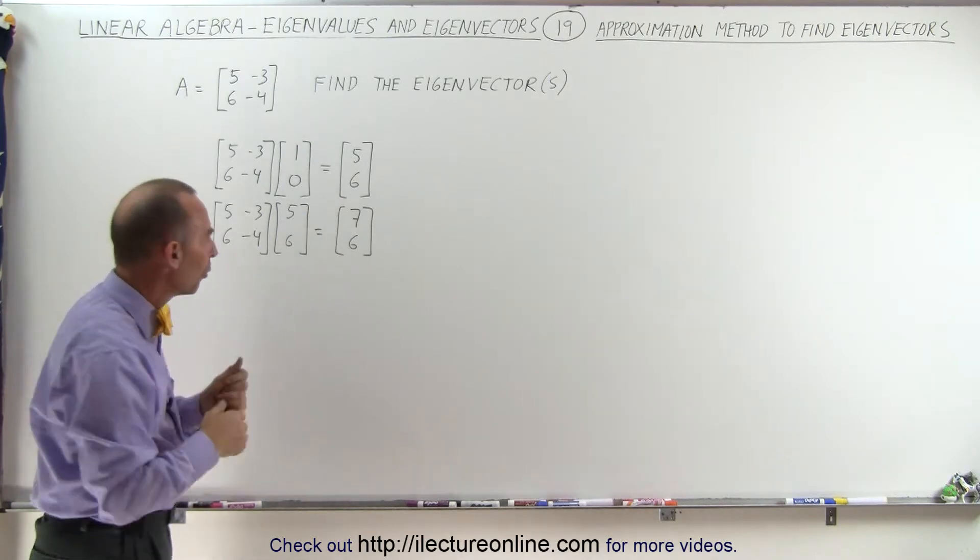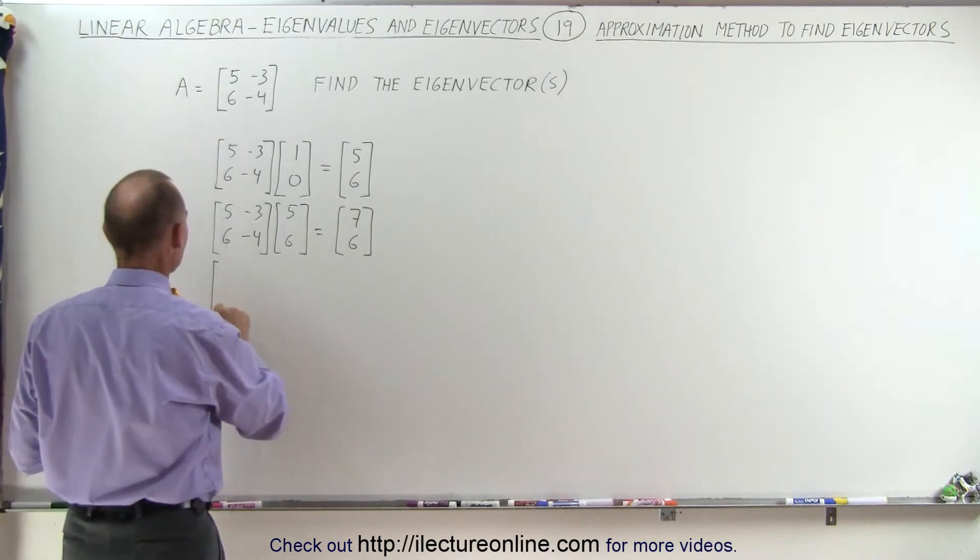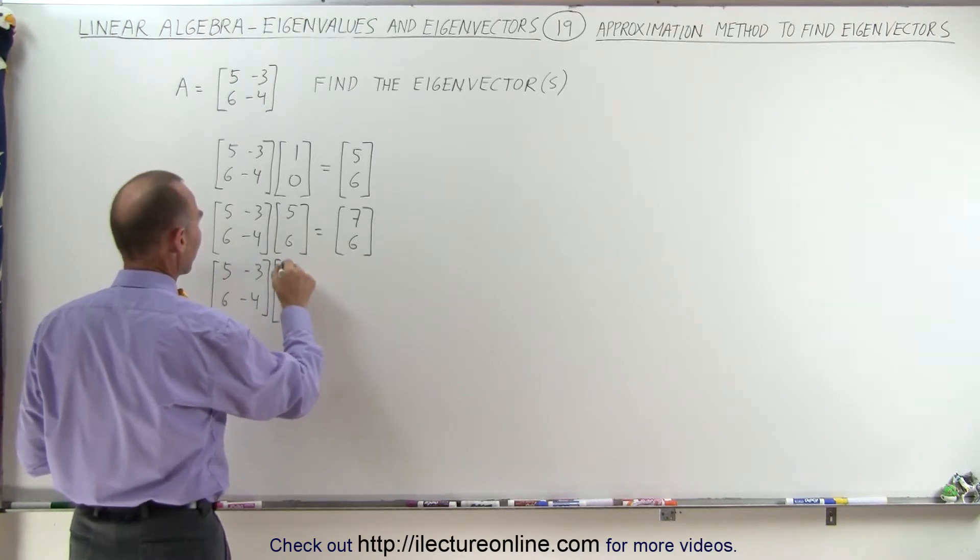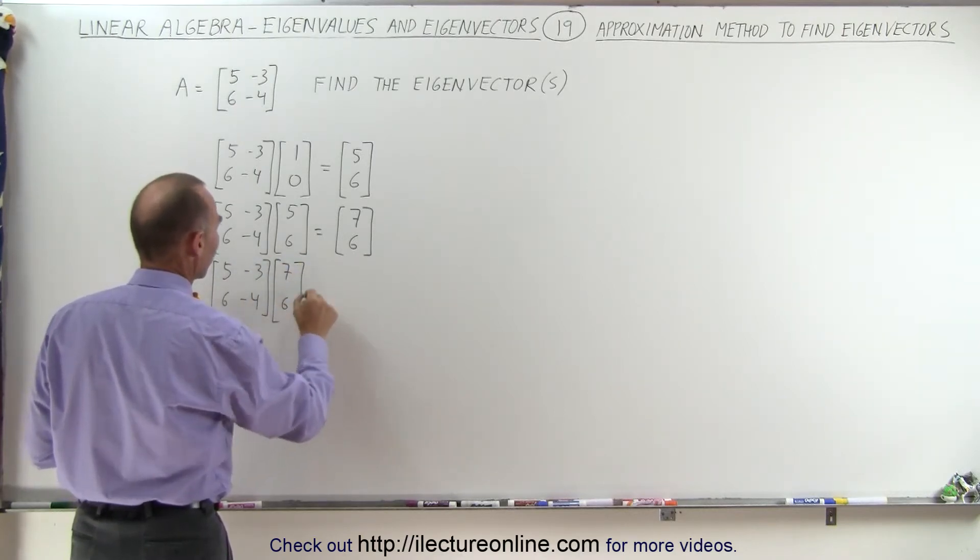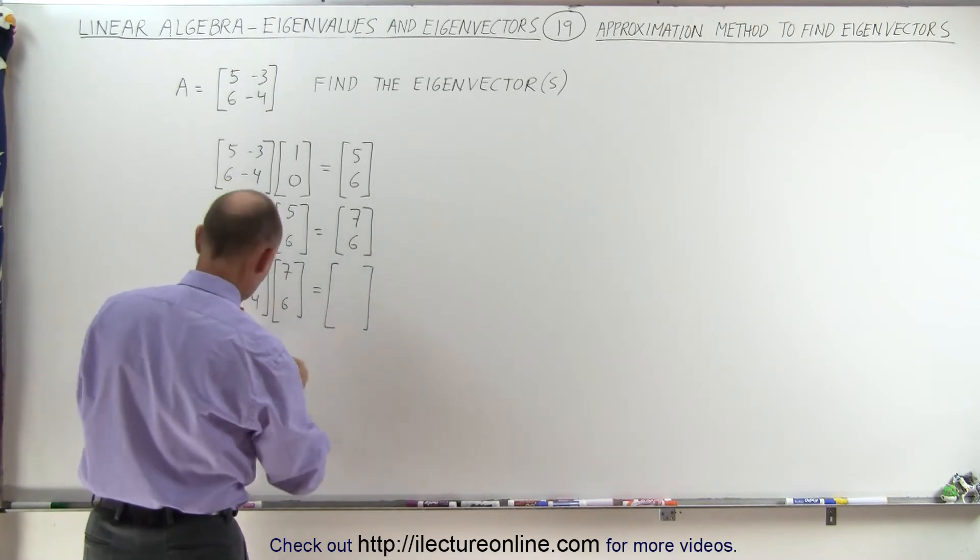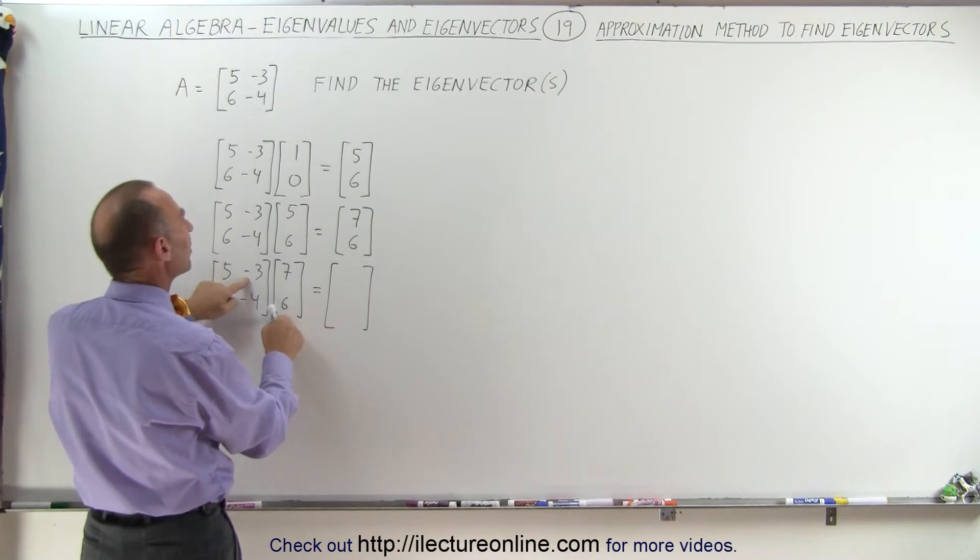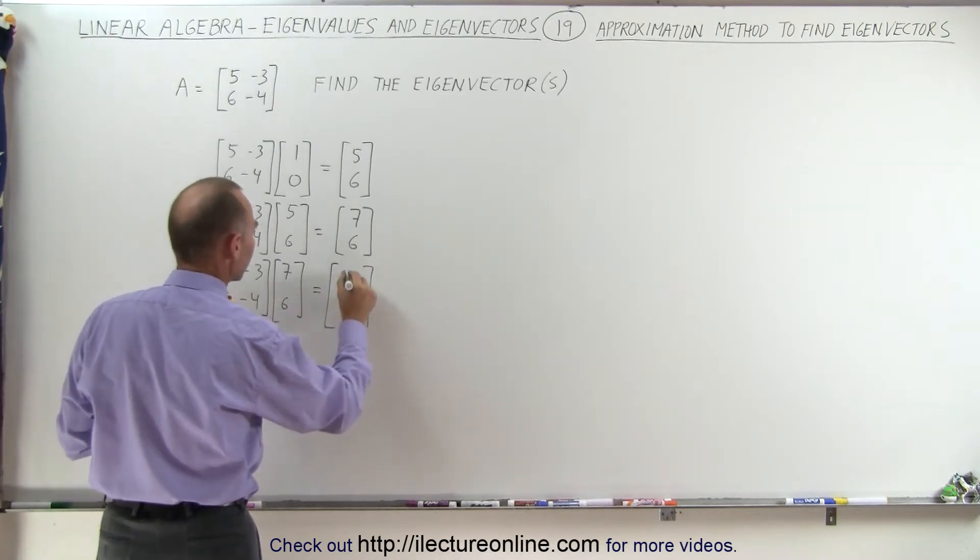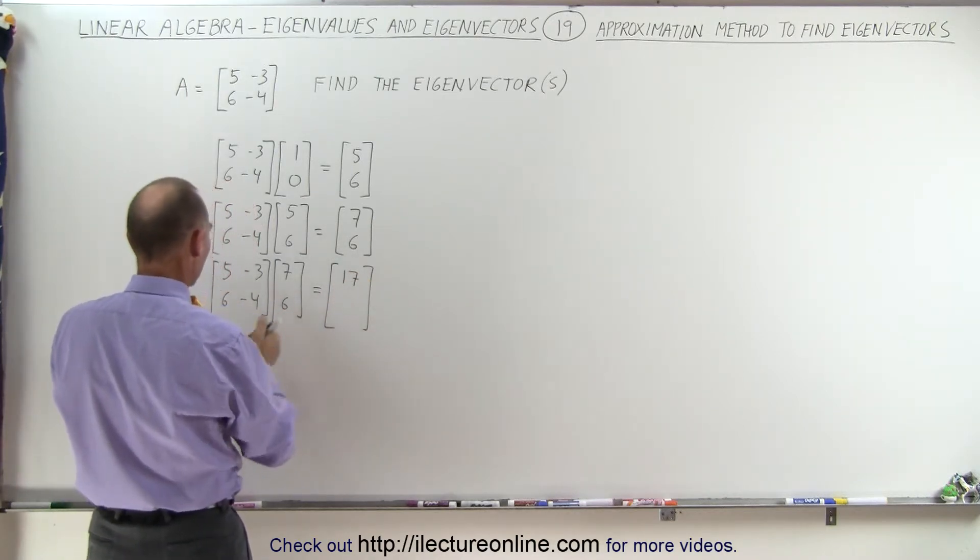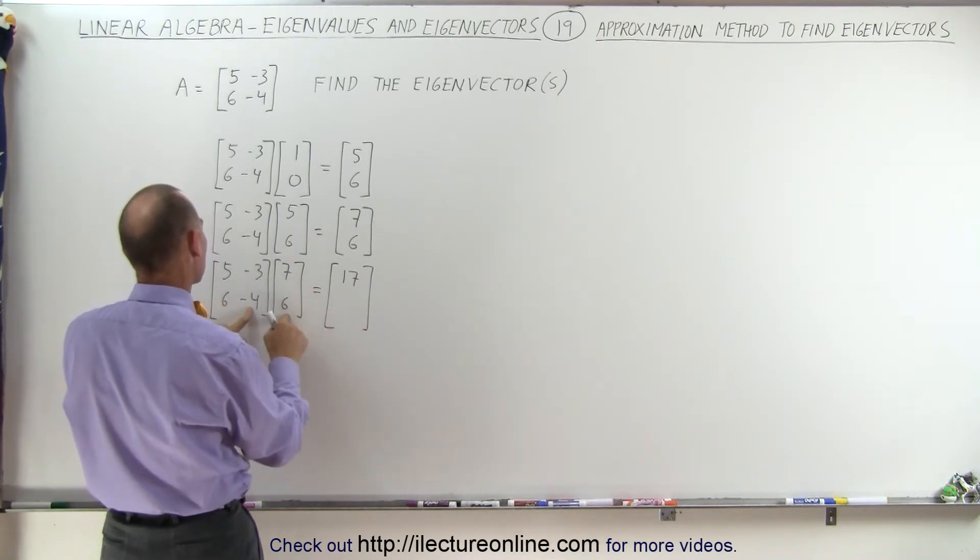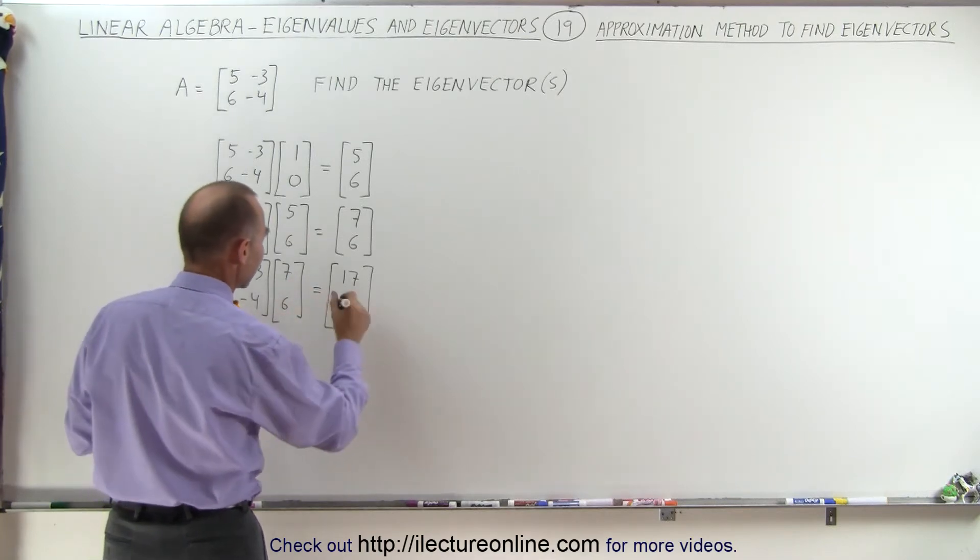But we're not sure yet, so let's go one more step. So we take the matrix again, 5, negative 4, and now multiply it times 7 and 6. And let's see what we get this time. So we get 35 minus 18, that would be 17, here, and 42 minus 24, 42 minus 24, that is 18.